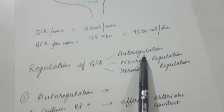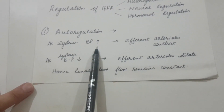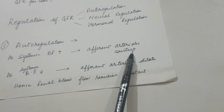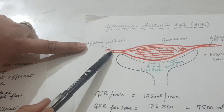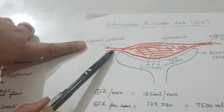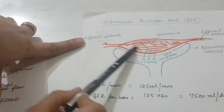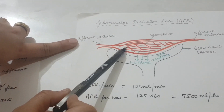First is auto-regulation. Auto means automatically. This is a system that is in the kidneys. As the systemic blood pressure increases, the efferent arterioles constrict. These efferent arterioles affect whether blood flow will increase or decrease. As the systemic blood pressure falls, the efferent arterioles dilate. When they dilate, more blood enters; when they constrict, less blood enters.